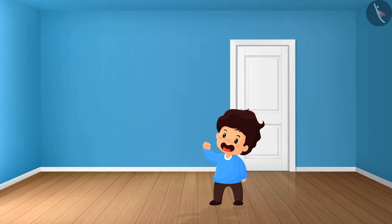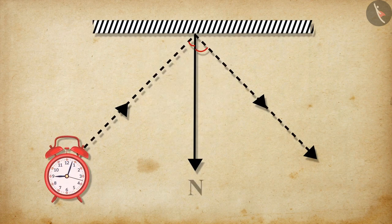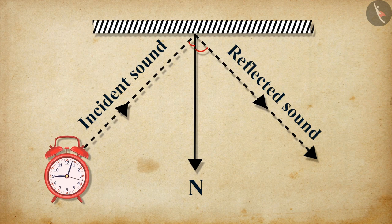When a sound gets reflected at a solid or liquid surface, it follows the same rules of reflection which are followed by light. The directions in which the sound is incident and the sound is reflected make equal angles with the normal of the reflecting surface at the point of incidence, and all three of them lie in the same plane.